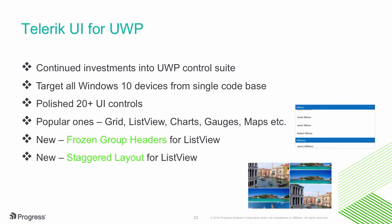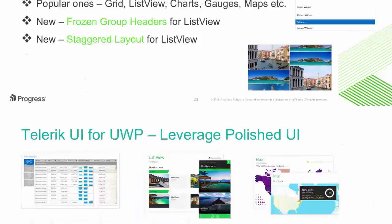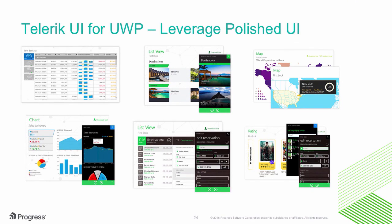New in the R3 DevCraft release, you'll see performance improvements across the product suite, and the list view gains features like frozen group headers and a staggered layout. Here's a quick view of some of the more popular UWP controls in the suite: a performant grid, a flexible list view, maps, different types of charts, and lots of input controls — all out of the box and ready to light up your UWP apps. And that's all for mobile.